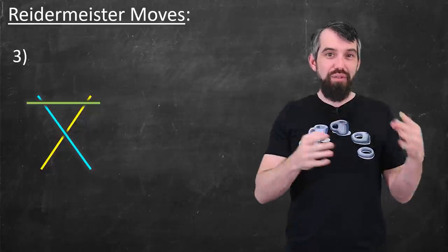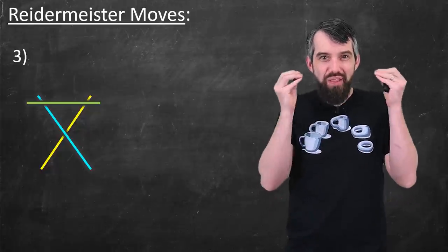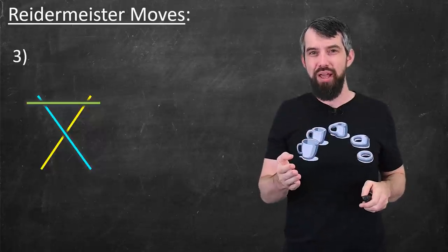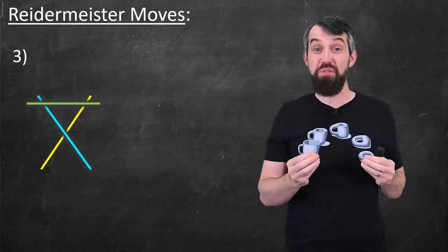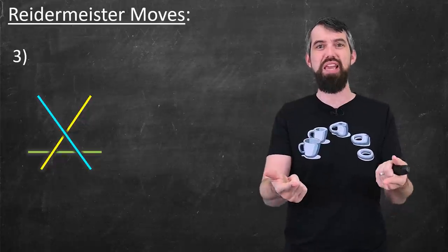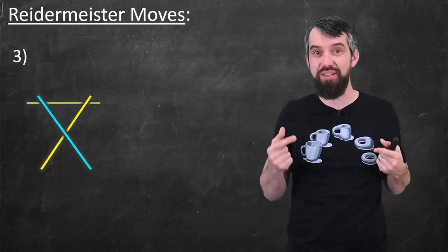The third one is if I have three different threads crossing over, but there's one on the top, like this green one here is clearly on top of both the blue and the yellow, then I can slide the one on top to the other side. Likewise, if the green one was on the bottom of the blue and the yellow, I could slide it underneath to the other side.